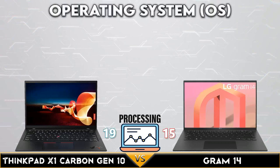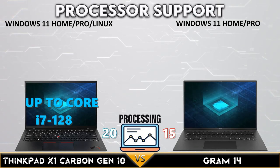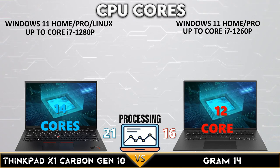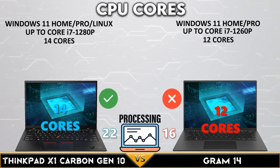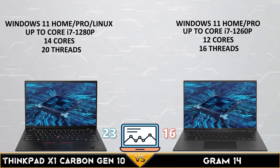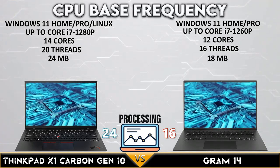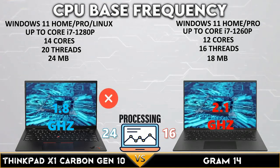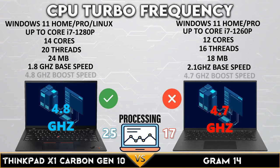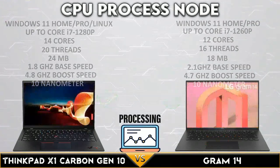Let's go into the processor comparison. The Lenovo ThinkPad supports Windows and Linux operating systems. Both support a 12th-generation Core i7 CPU. The ThinkPad has 14 cores, 20 threads, and 24MB of L3 cache. The LG Gram is better in CPU base clock, while the Carbon is better in CPU turbo speed. Both have a 10nm CPU process node.